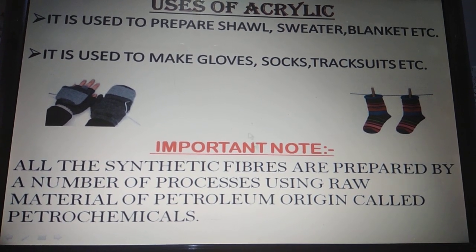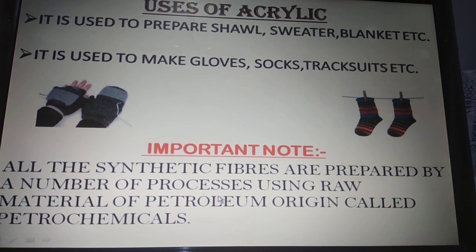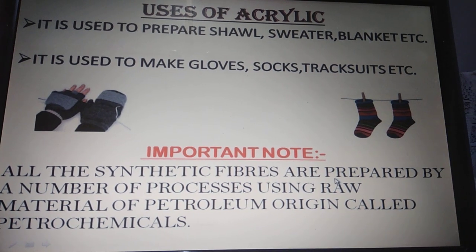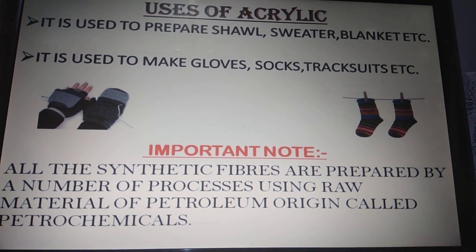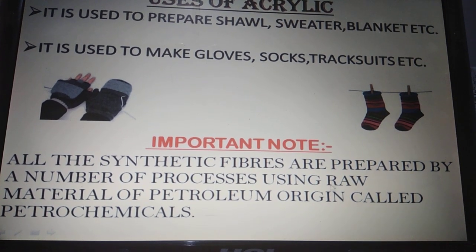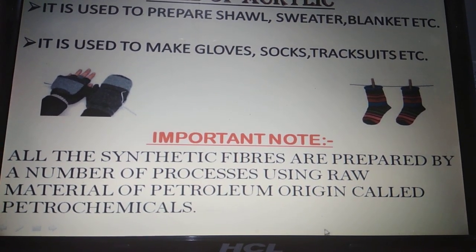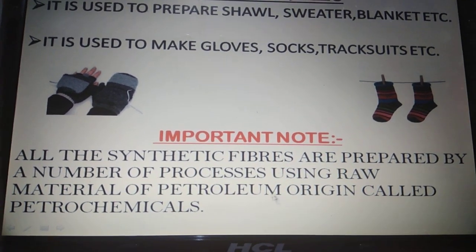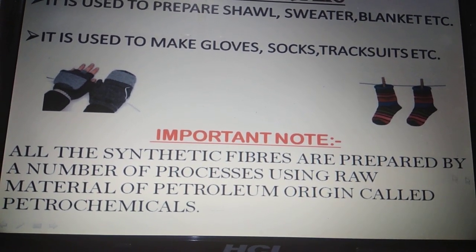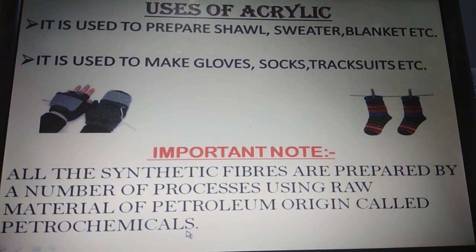An important note — always remember, children. All synthetic fibers are prepared by a number of chemical processes. The raw material for all synthetic fibers — nylon, acrylic, rayon, and all others — the main material which has to be present is known as petrochemicals. They are called petrochemicals because these materials come from petroleum origin, that is, petroleum oil. So all synthetic fibers are prepared using raw material of petroleum origin, which is called petrochemicals.